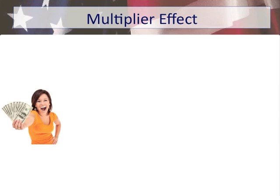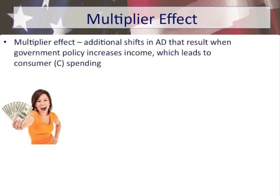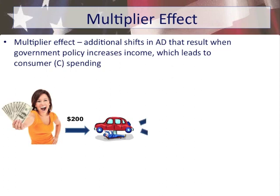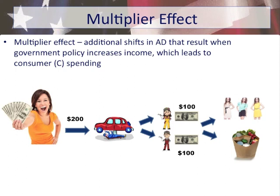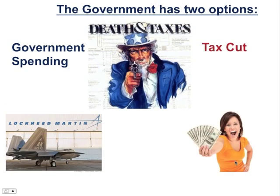When the government is trying to determine whether to cut taxes or increase spending, one thing they analyze is the multiplier effect. The multiplier effect is the idea that when money is provided to consumers, or the government spends money, that money is spent many times over, creating a shift in aggregate demand. For instance, when someone spends $200 to get a car fixed, the mechanic pays employees, those employees spend on clothing or groceries, and so that money multiplies many times over.